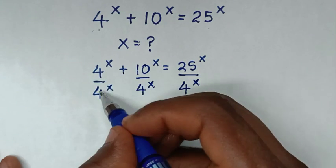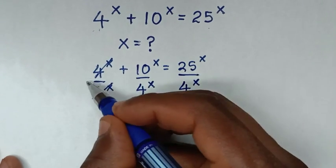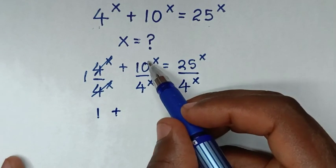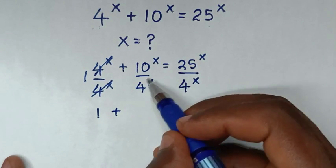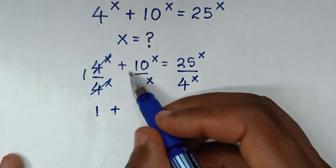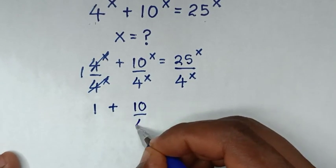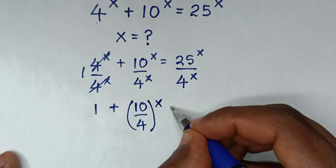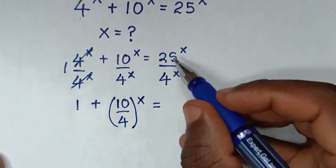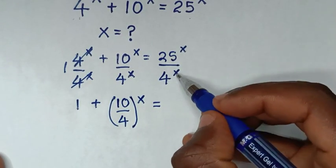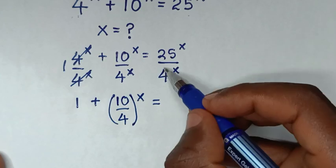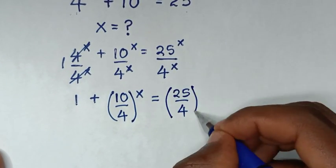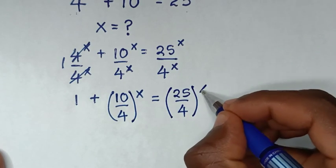Then, 4^x divided by 4^x is 1. For the division of exponents with the same power of x, it becomes the base 10 divided by 4, bracket to the power of x, equal to the base 25 divided by 4, bracket to the same power of x.